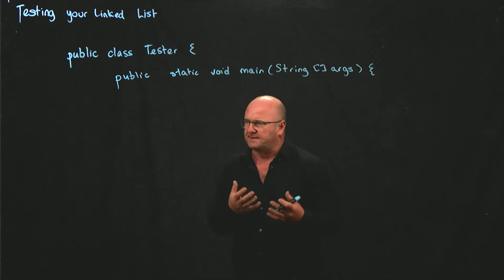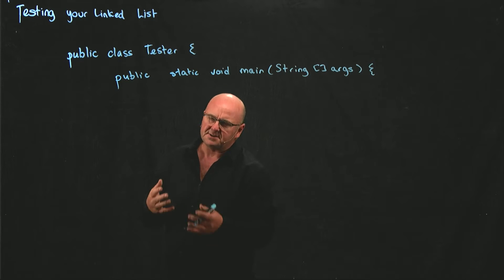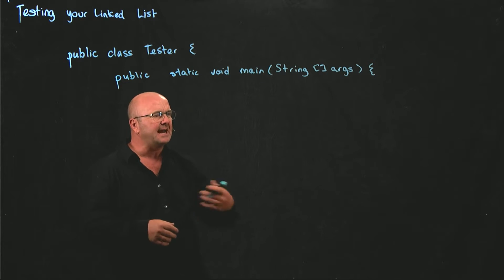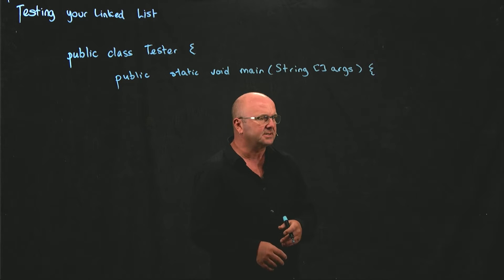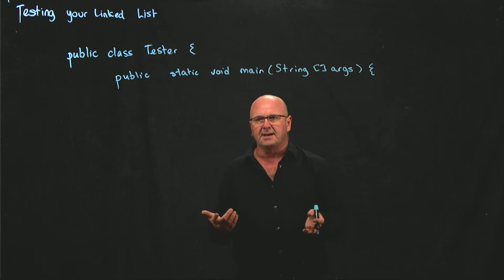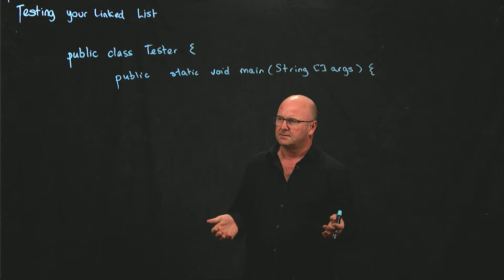But what we really want is like five or ten things, or maybe a hundred or a thousand things that we want to add to our linked list. Instead of making a thousand different strings and trying to come up with variations on strings, there's a really simple way to make a thousand different things. We'll just use numbers.